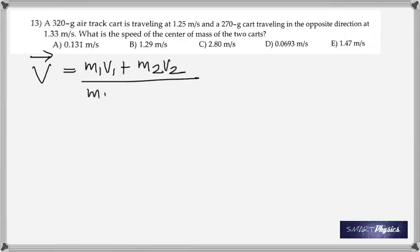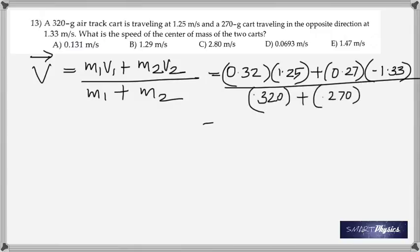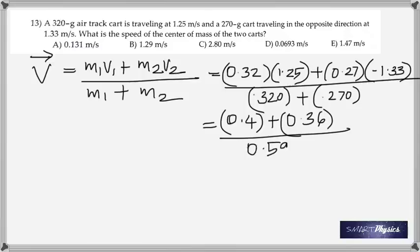We've got to find the speed of the center of mass and use the formula. Be careful with the numbers. Be careful that you do not switch them. 1.29 meters per second.